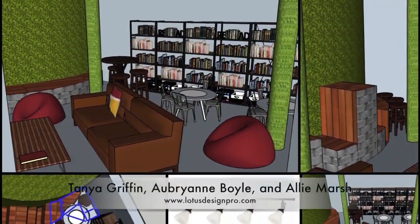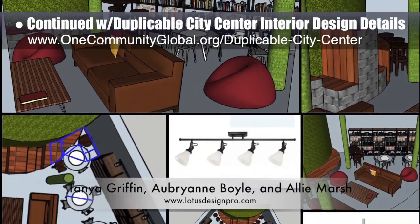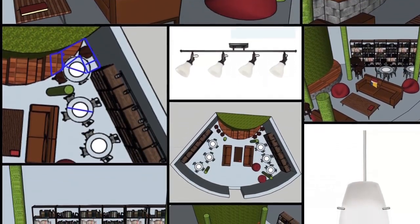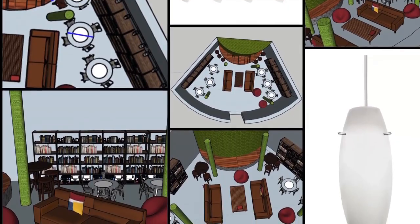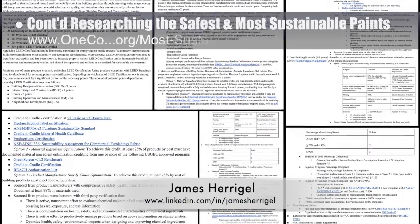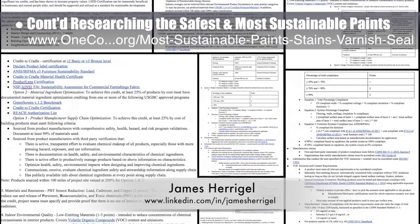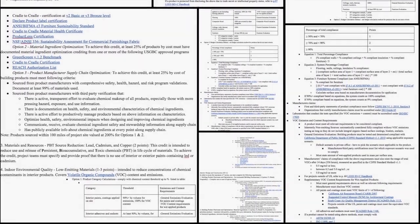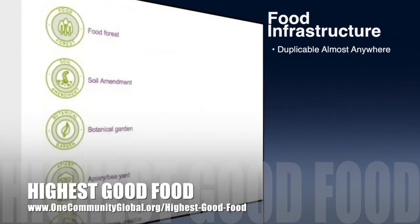Tanya Griffin, Aubry Ann Boyle, and Ali Marsh — interior designers from Lotus Designs — completed their fourth week helping with the duplicable city center interior design details. This week they explored options for pendant and track lights, additional corner seating, and staggered seating with storage and workspaces along the back wall. James Harrigal, student researcher, also completed a seventh week researching the best, safest, and most sustainable paints, with this week's focus beginning the process of integrating LEED points details related to paints. You can see some of this behind-the-scenes work here.